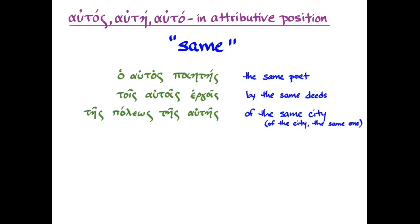I find autos, ate, auta in attributive position to be the easiest one to remember because it's consistent, it is simply an adjective, and in fact it is using autos in the same way that we use same in English. In other words, we put same between the article and the noun that it's modifying. So it matches up really nicely and it's a pretty simple thing to remember.